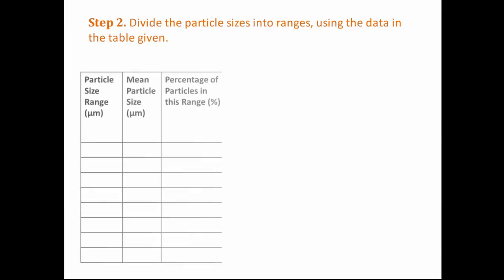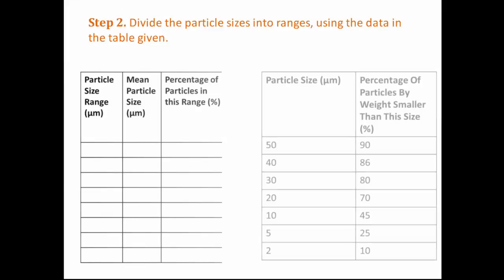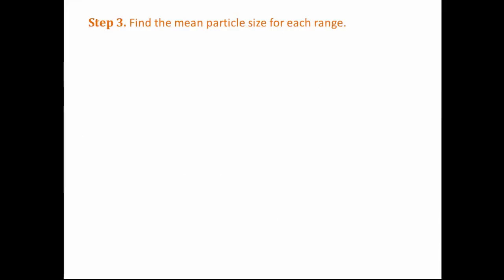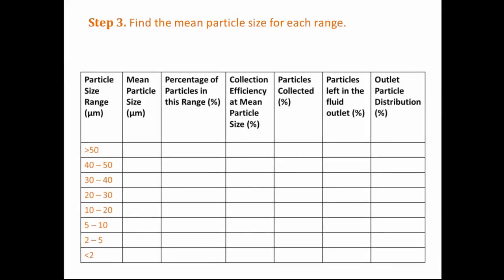To start filling in the table, we write down the ranges of particle sizes from the table given in the question. To include all the particles, we start with particles bigger than 50 and end with particles smaller than 2 micrometres. Next, we find the mean size for each range. There is no mean particle size for particles bigger than 50 as the range is infinite. For the rest of the ranges, we add up and divide by 2. For example, 40 and 50 divided by 2 is 45 micrometres.